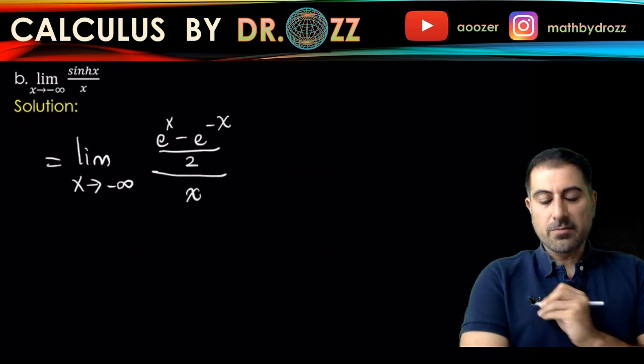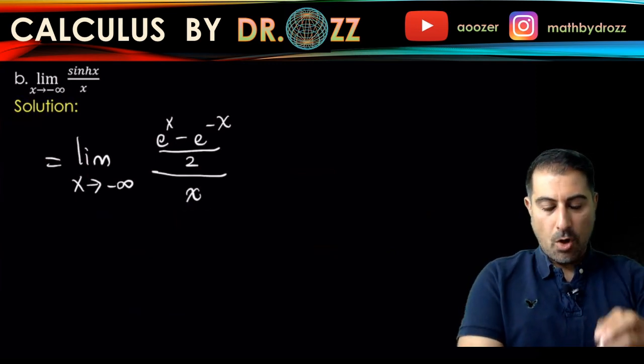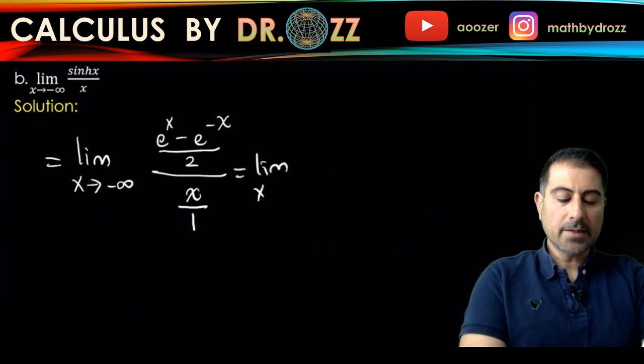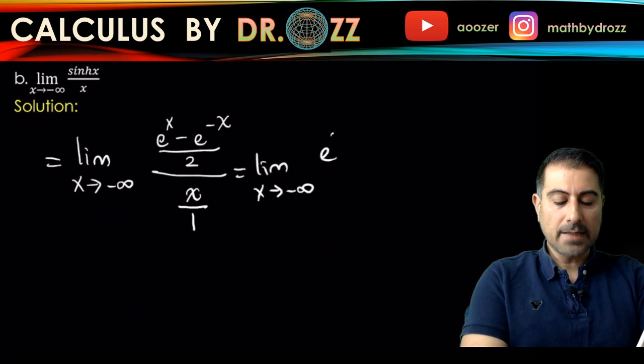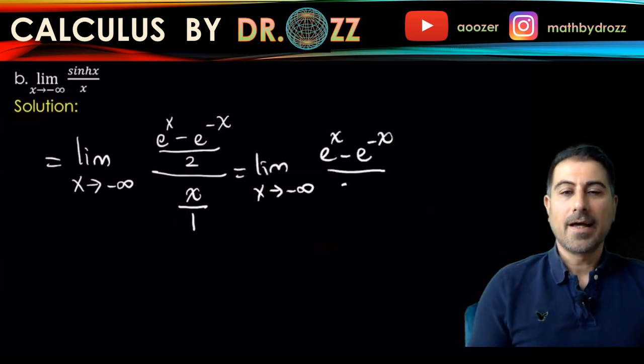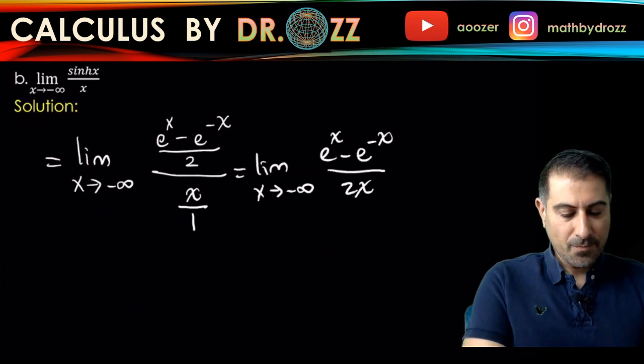In the bottom, you can flip it over so you have e to the x minus e to the minus x divided by 2x, and this way it's easier to handle.